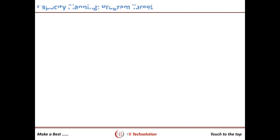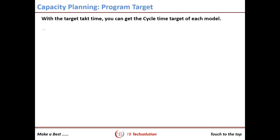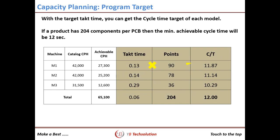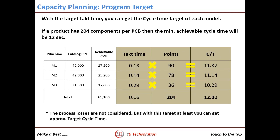Considering this, we got a line utilization of 56% from the catalog CPH, and the line tack time was 0.06 seconds. With tack time and number of components per PCB, you can calculate the cycle time — this will be your target cycle time. Your programmer needs to achieve the minimum possible cycle time. This also helps decide the number of arrays in a panel for a new product and the best suitable line configuration for new investment.